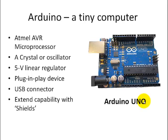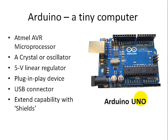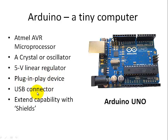A little more detail on the Arduino board: it consists of an Atmel AVR microprocessor, timing is based on a crystal oscillator, running on 5 volts using a 5-volt linear regulator. It's basically a plug-and-play device where you can connect your Arduino to a computer and program it through a USB connection, and you can extend the capability with shields.